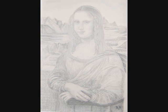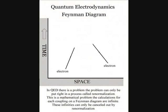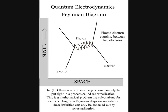In quantum electrodynamics, there is a problem. The problem can only be put right in a process called renormalization. The calculations for each coupling on a Feynman diagram are infinite. These infinities can only be cancelled out by renormalization.